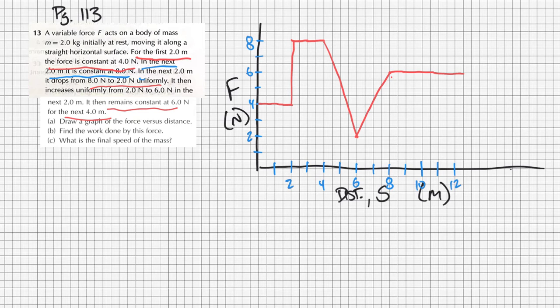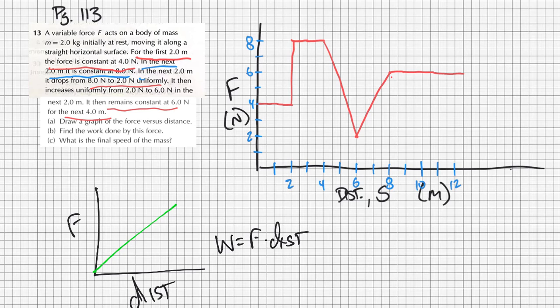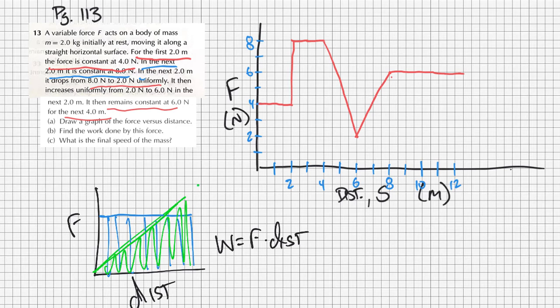And it then remains constant at 6 for the next 4 meters. That's a lot of back and forth with this one. So that's 10, 11, and 12. So next 4 meters, we're at 8, and then it remains at 6. So that's my graph. Second, find the work done by this force. Well, if we think about this in terms of a force versus distance graph, remember that work equals force times distance.